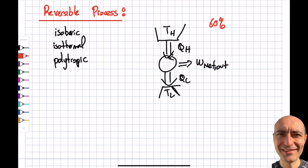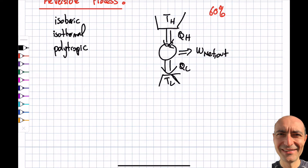As I will find out soon, the reversible process gives me the maximum efficiency that I can obtain — for instance for internal combustion engines and others. That's why I introduce you to the reversible process. I've explained what it is and what it is not; now let me tell you what it is.